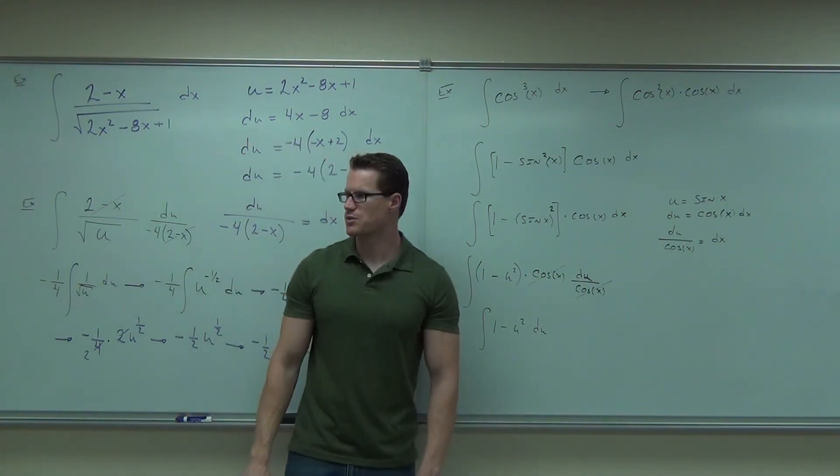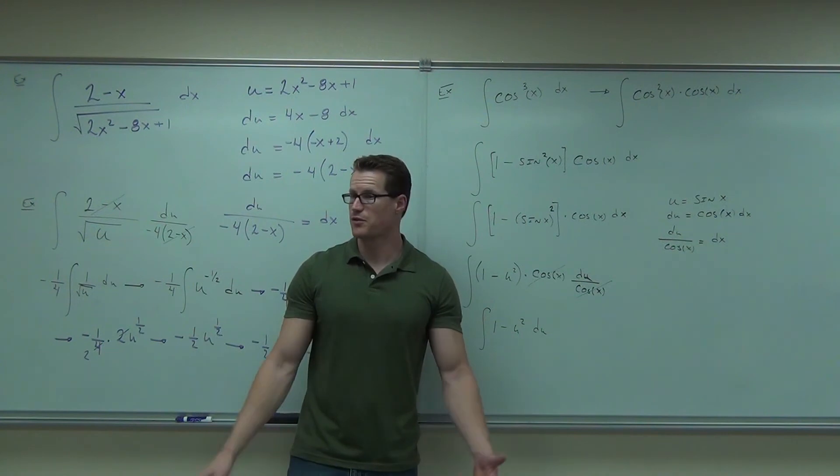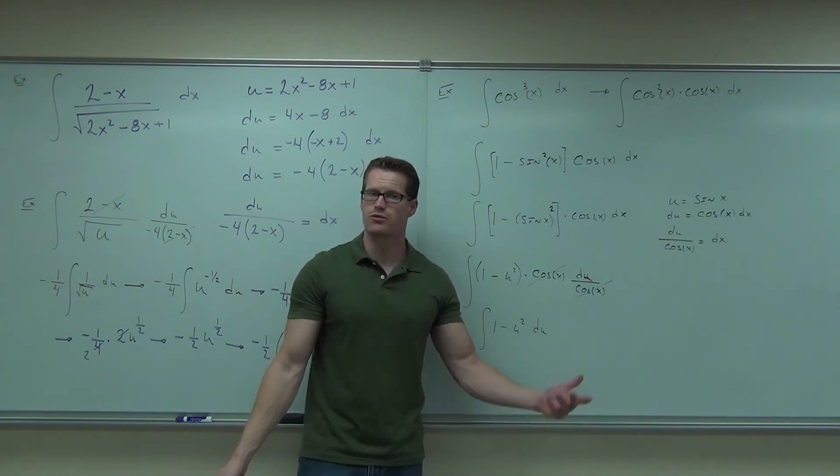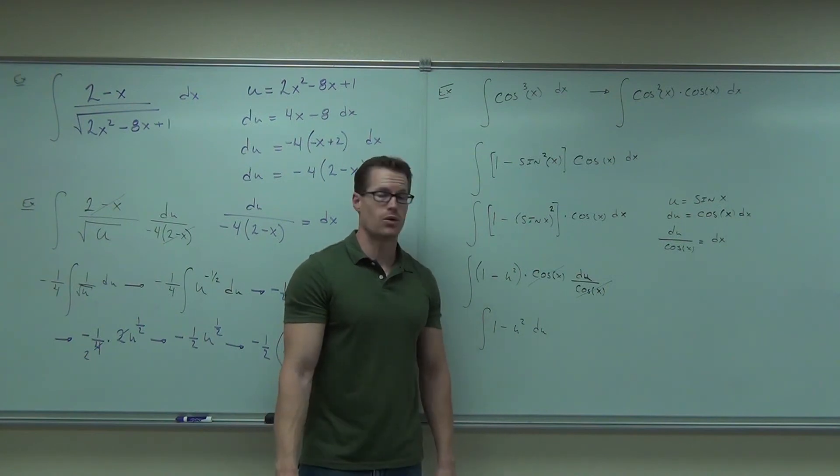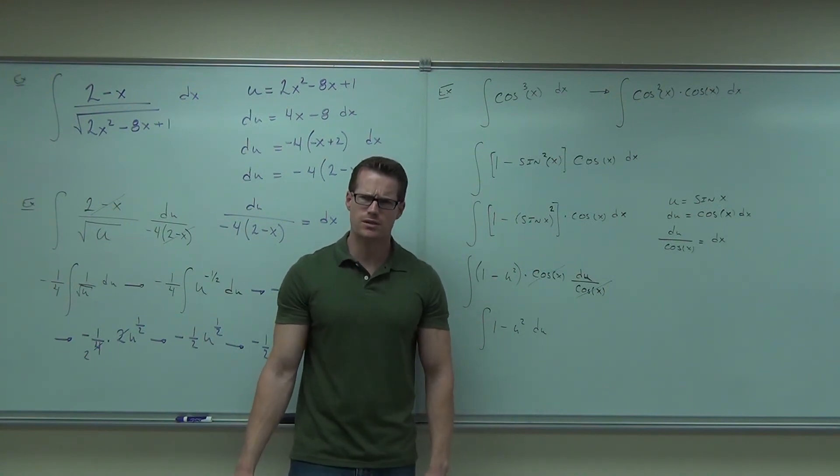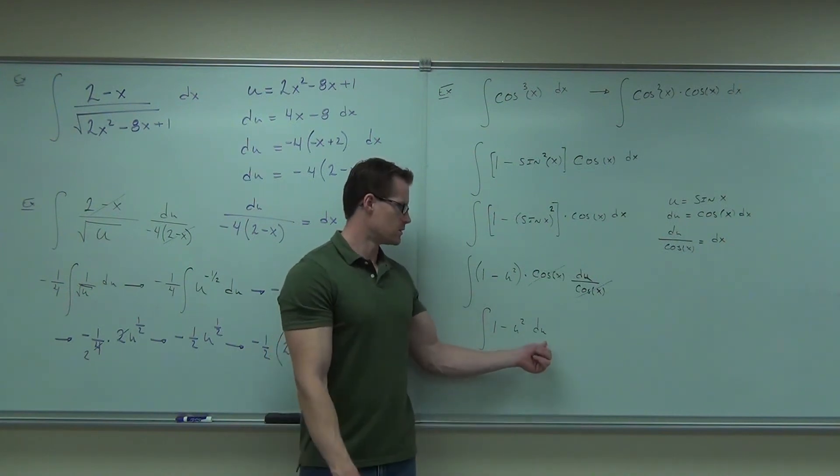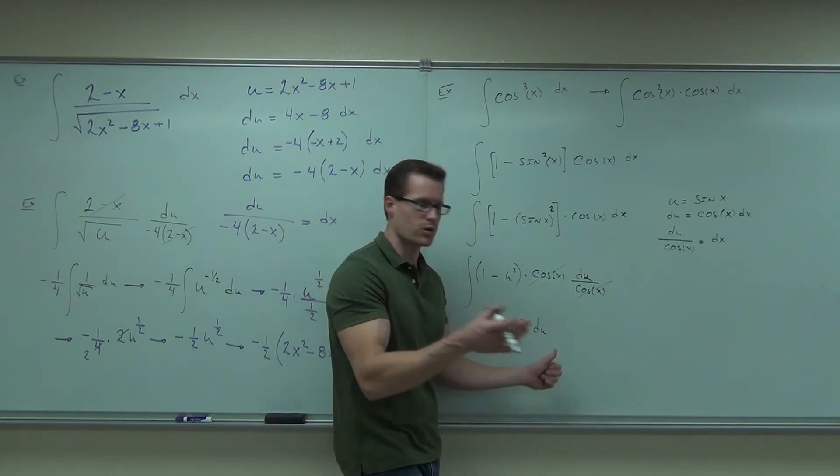This one's turned out to be so nice. One minus u squared, du. That's not bad. Not bad at all. Okay, take the integral of one minus u squared, du. Fits perfectly in our integration table. What's the integral of one? Tell me that. X? U. No, not x. U. U? Yes. Why u and not x? Look at your variable. You're integrating with respect to u. That's why the d whatever is important.